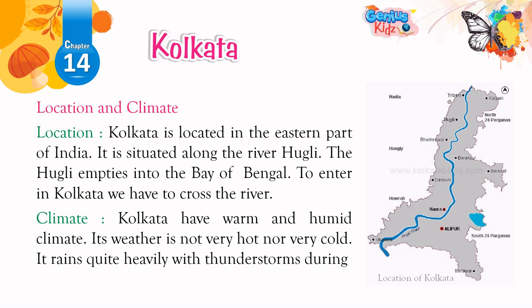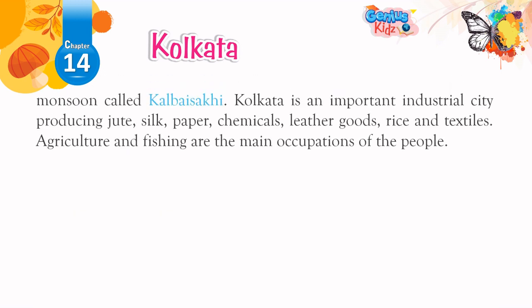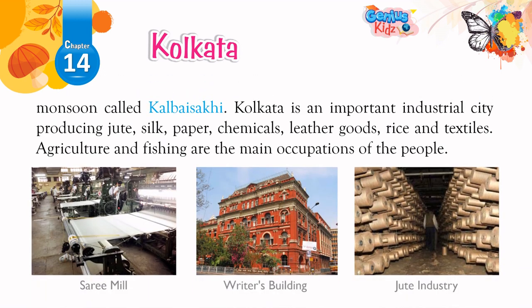It rains with thunderstorms during monsoon, called Kalbaisakhi. Kolkata is an important industrial city producing jute, silk, paper, chemicals, leather goods, rice and textiles. Agriculture and fishing are the main occupations of the people.